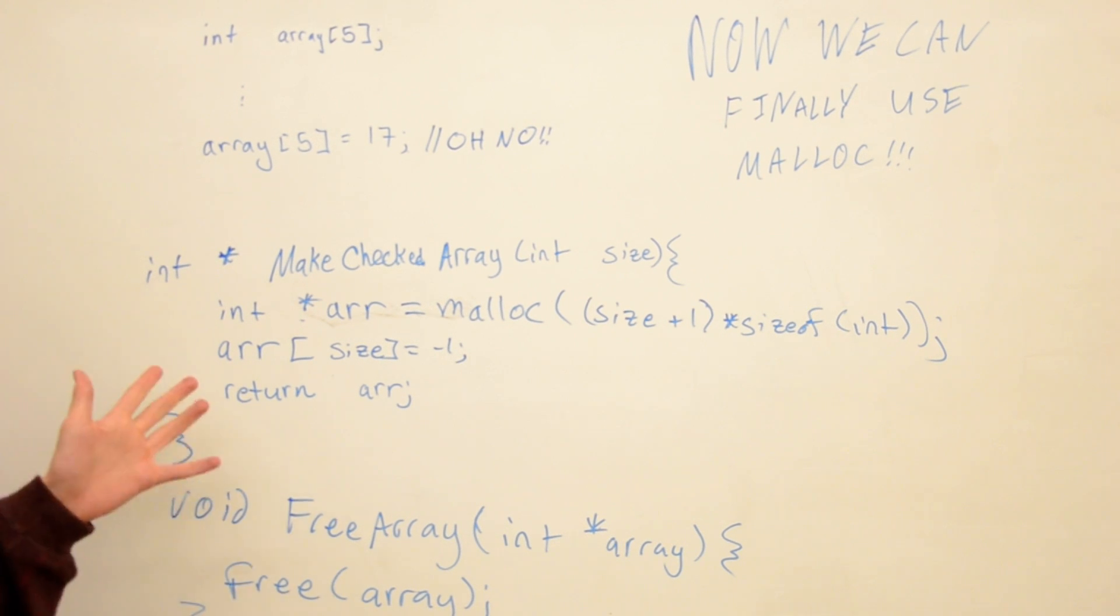So we'll call this function when we stop using the array. That's how you would make a checked array in C. And it also serves as a good introduction to how to use malloc.